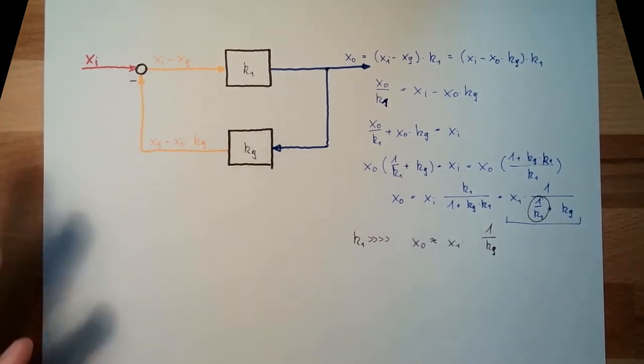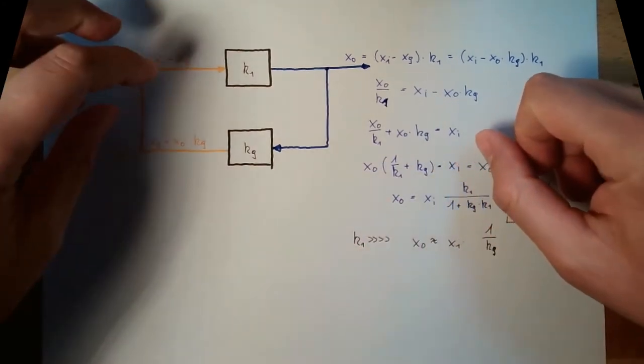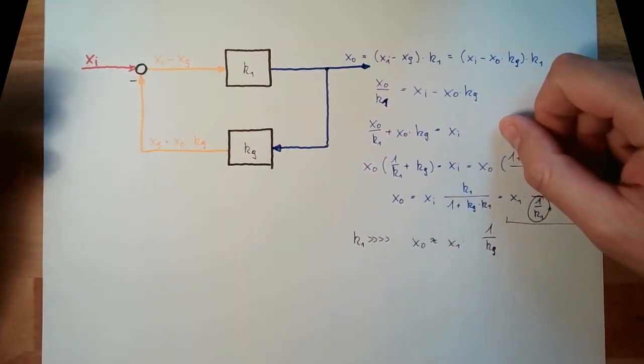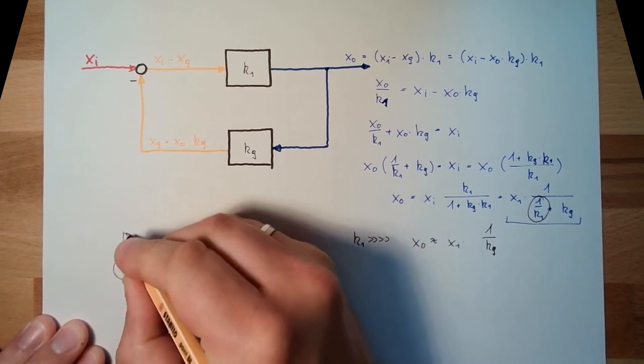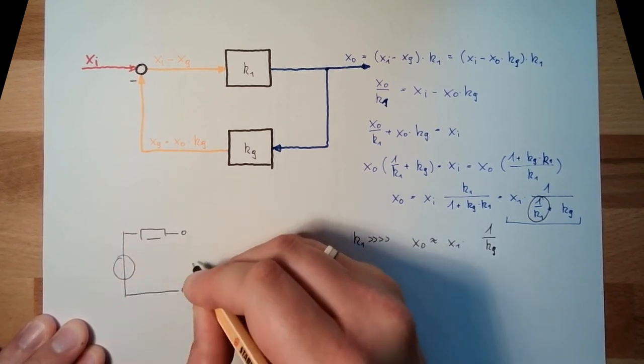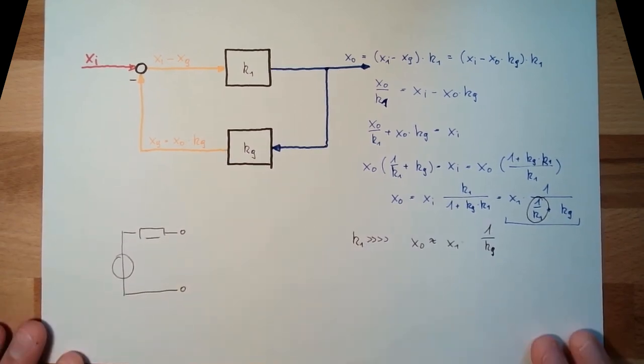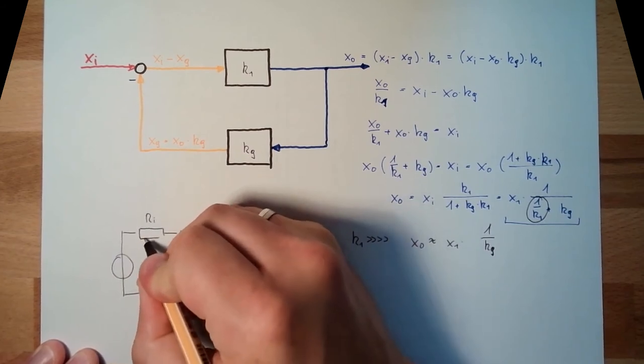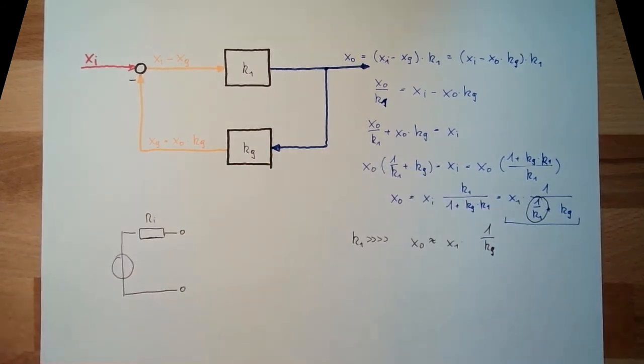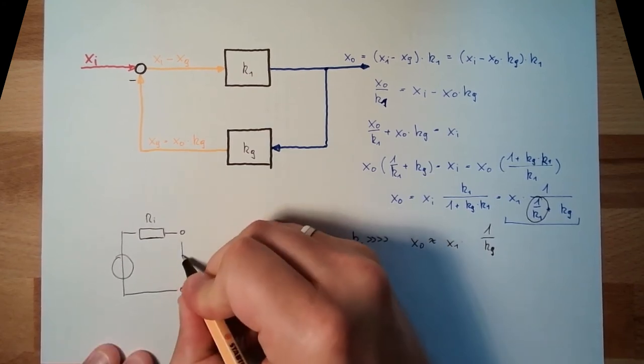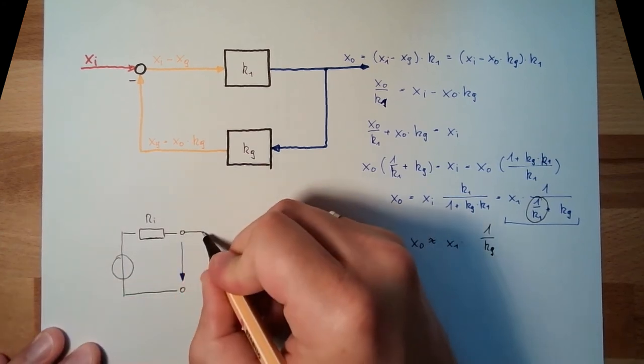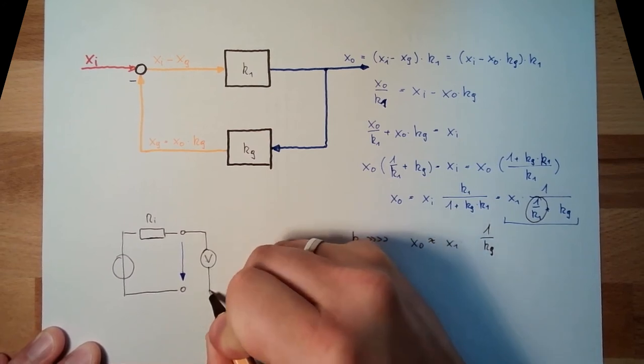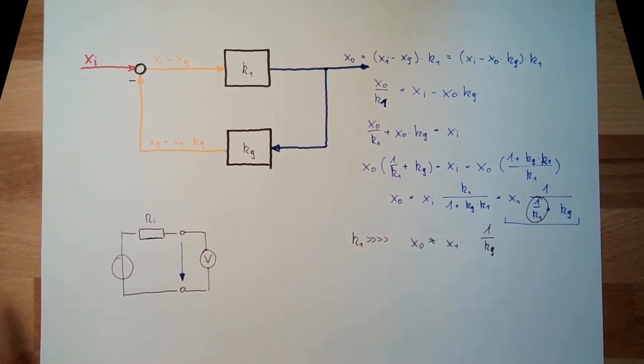So, I could measure voltage. Here, I have some voltage I want to measure. Usually, this is our voltage source and we have some internal resistance. So, if I want to measure the voltage here, at this point, this voltage I want to measure. Then, I add here my measuring equipment, voltmeter. And because I add here my measuring equipment, I produce a current.